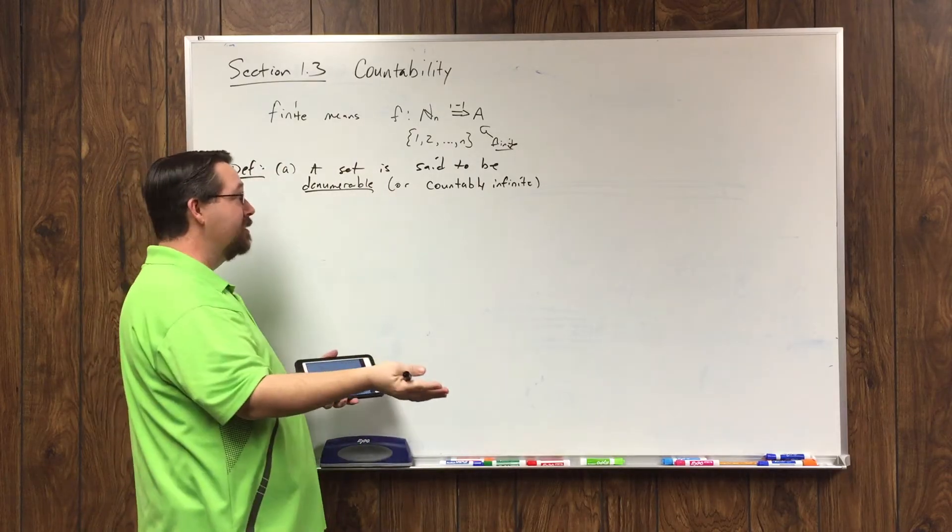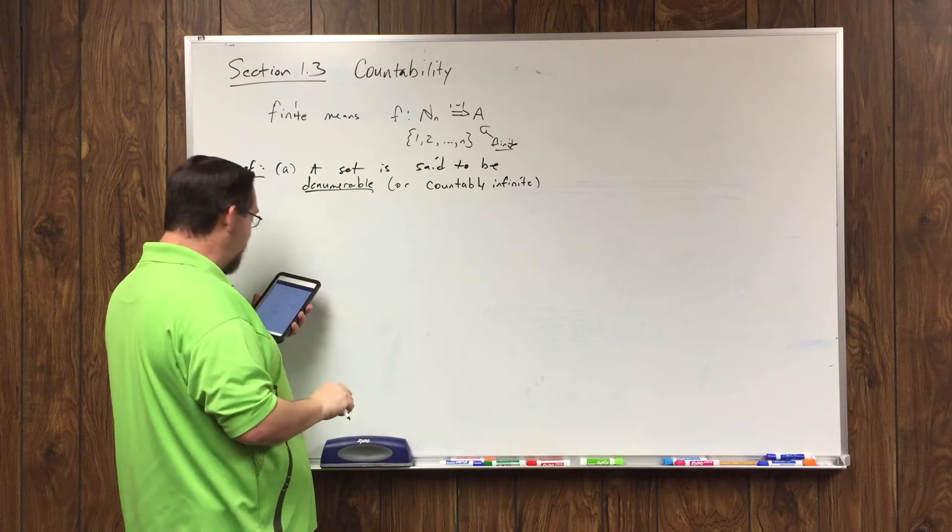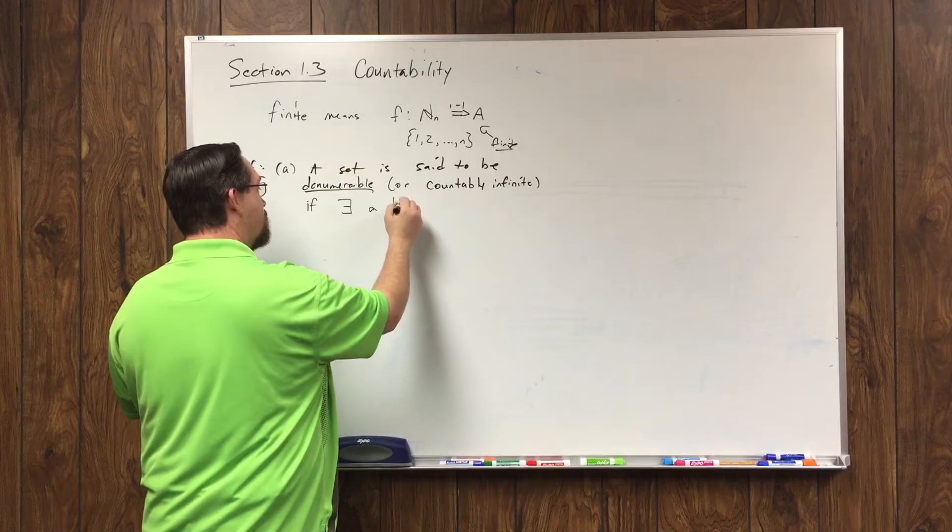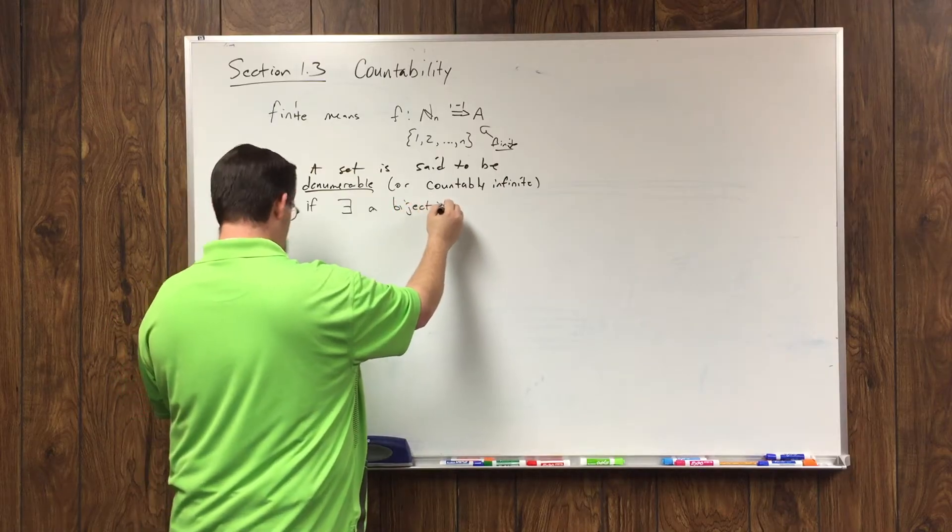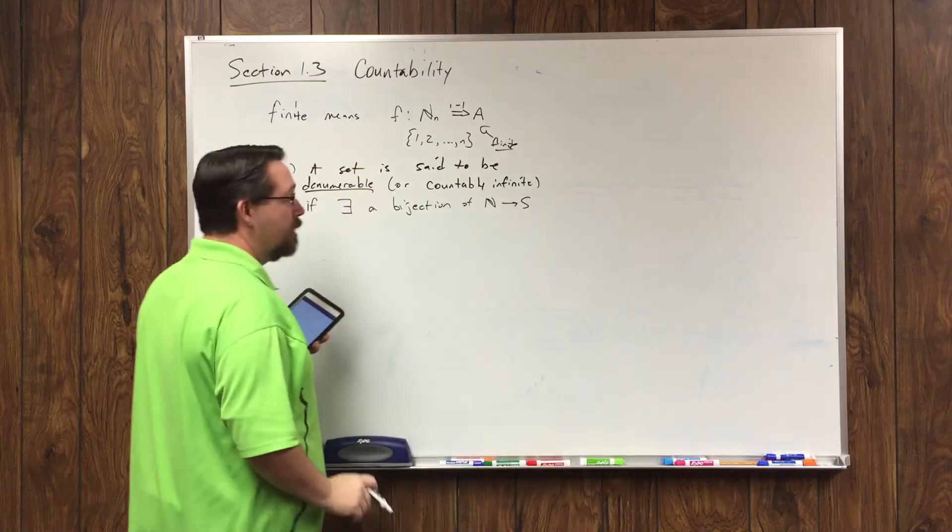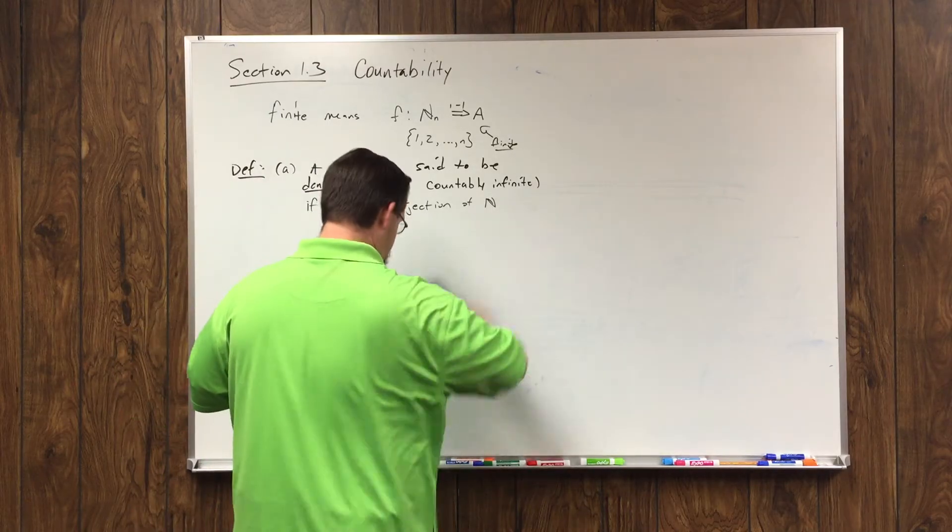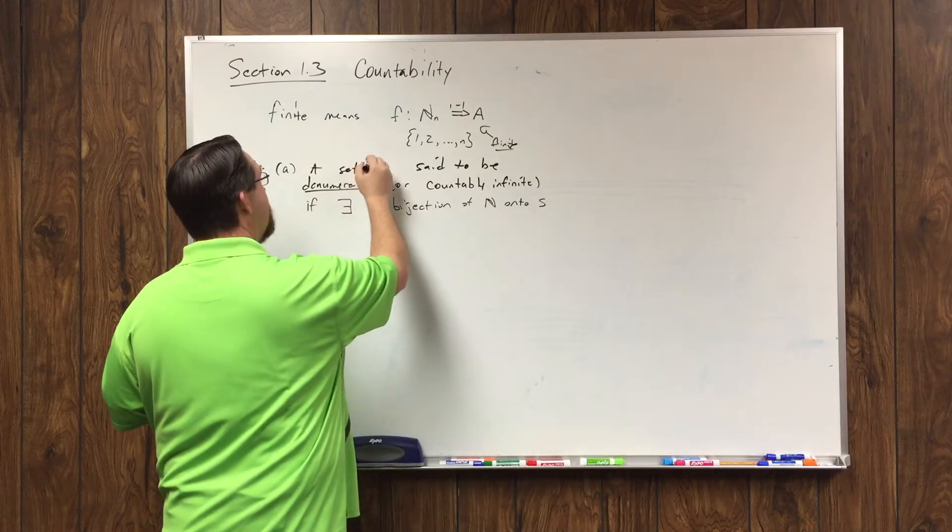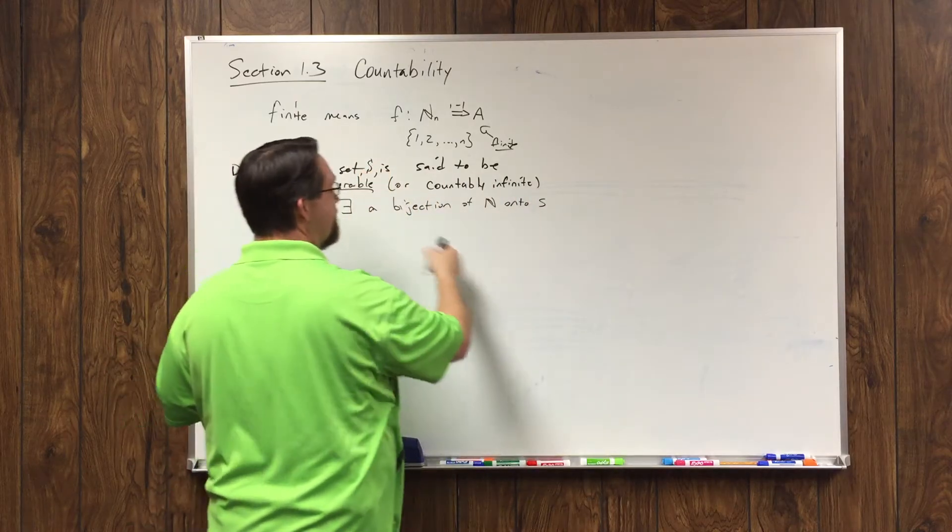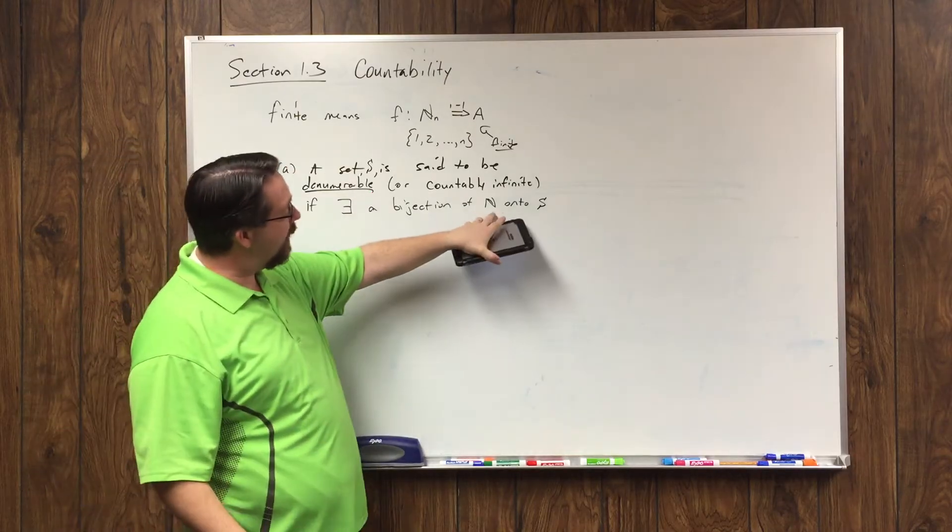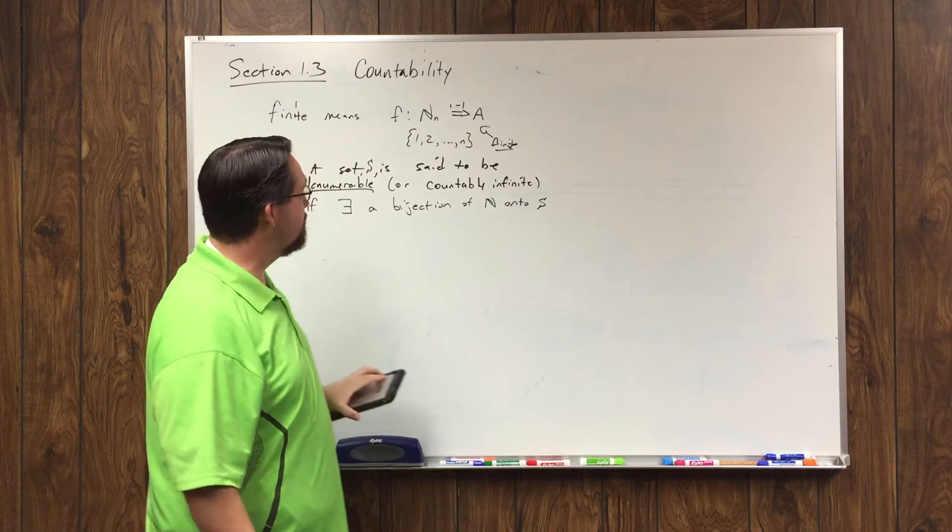Denumerable sets are infinite, but they're a special kind of infinite. That means there exists a bijection of the natural numbers onto the set S. A set S is said to be denumerable if there exists a bijection of the entire natural numbers onto S.